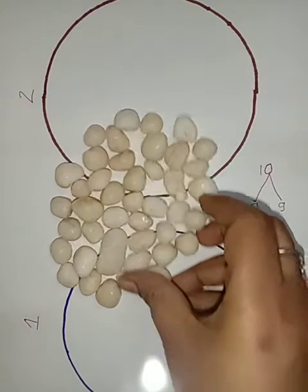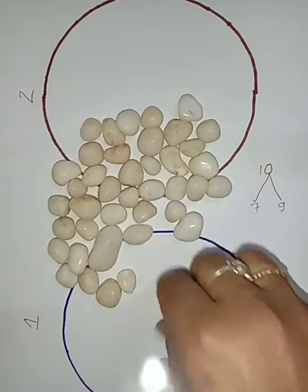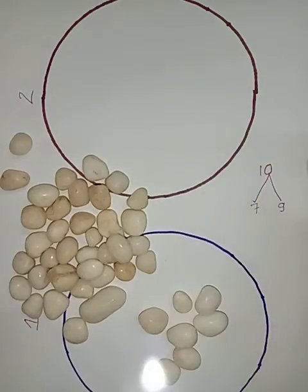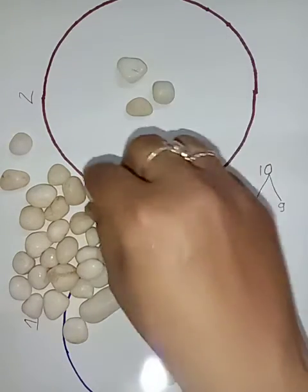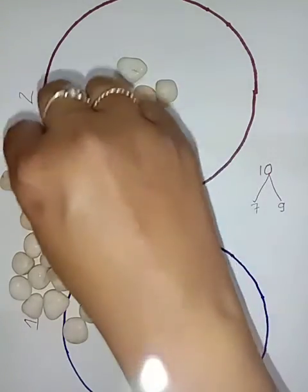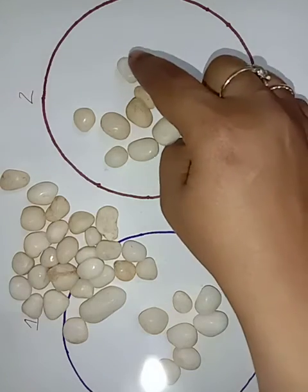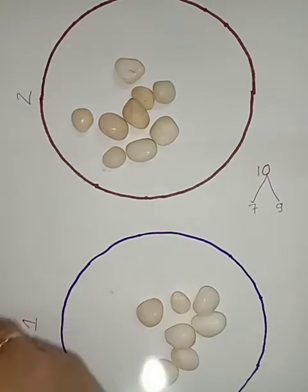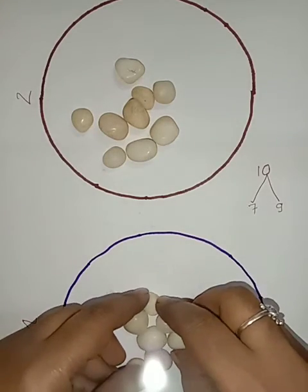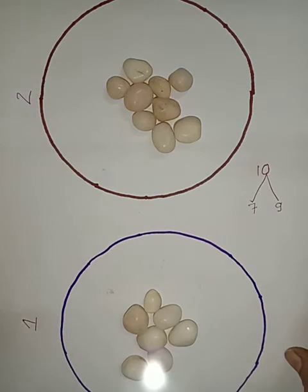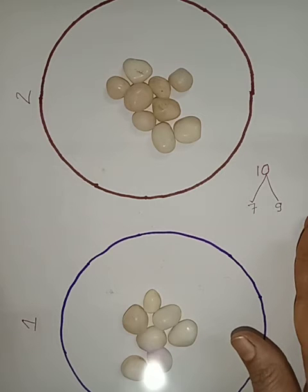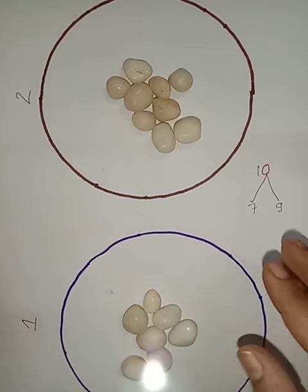In the first circle I want 7 pebbles — I have counted and taken 7 pebbles. In the second circle I have to put 9 pebbles — let me count: 1, 2, 3, 4, 5, 6, 7, 8, 9. So rest all I will remove from here. Now in the first circle there are 7 pebbles and in the second circle there are 9 pebbles, isn't it children?